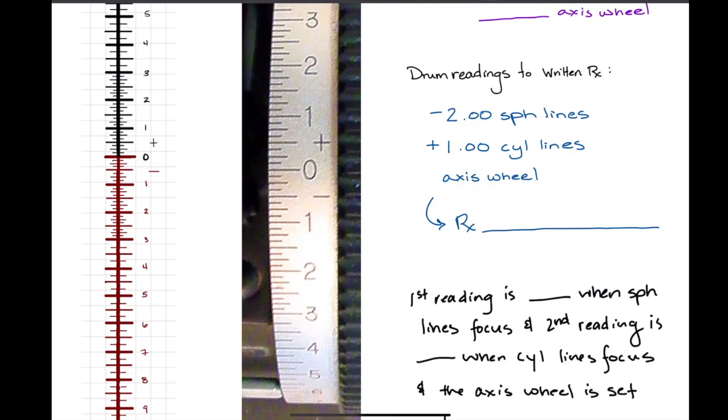That should actually read zero because the axis wheel doesn't have 180, it has zero. So if you look at the power drum, we started out at minus 2, so we lined up right here with minus 2. This was our sphere reading. And then we went to plus 1, and that was where we got our cylinder reading. And then our axis wheel, what does it say? Zero.